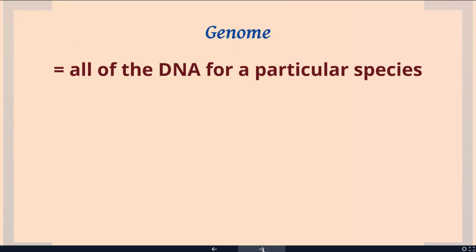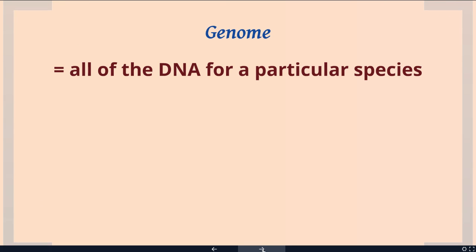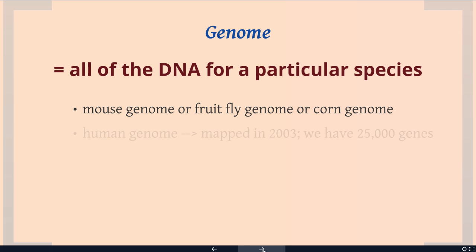The genome is all of the DNA for a particular species. So there's a mouse genome, a fruit fly genome, a corn genome, and of course we have the human genome. The human genome was mapped in 2003, and they estimated from that project that we have about 25,000 genes.